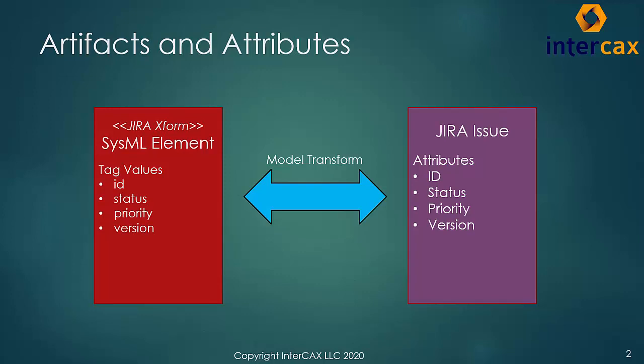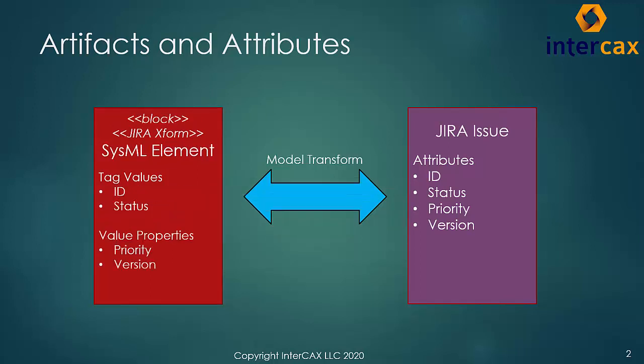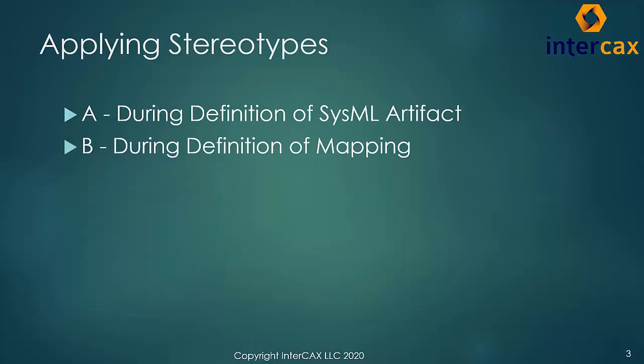If I add the Jira transform stereotype to the SysML element, with the tag values ID, priority, status, and version, I can create a Cyndia mapping between these and equivalent attributes of the Jira issue. Not only are the values of these attributes carried over in the initial model transform, they can be compared and updated in many cases as the models change over time. If the SysML element is a block, we have the option of storing some of those attributes as value properties. Cyndia provides two options: when the artifact is specified, and when the mapping is specified. We will demonstrate both approaches and discuss the differences.